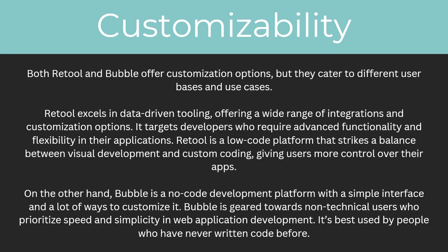So which one offers better customisation options? Retool excels in data-driven tooling, offering a wide range of integrations and customisation options. It targets developers who require advanced functionality and flexibility in their applications. Retool is a low-code platform that strikes a balance between visual development and custom coding, giving users more control over their apps. On the other hand, Bubble is a no-code development platform with a simple interface and a lot of ways to customise it, geared towards non-technical users who prioritise speed and simplicity. It's best used by people who have never written code before.